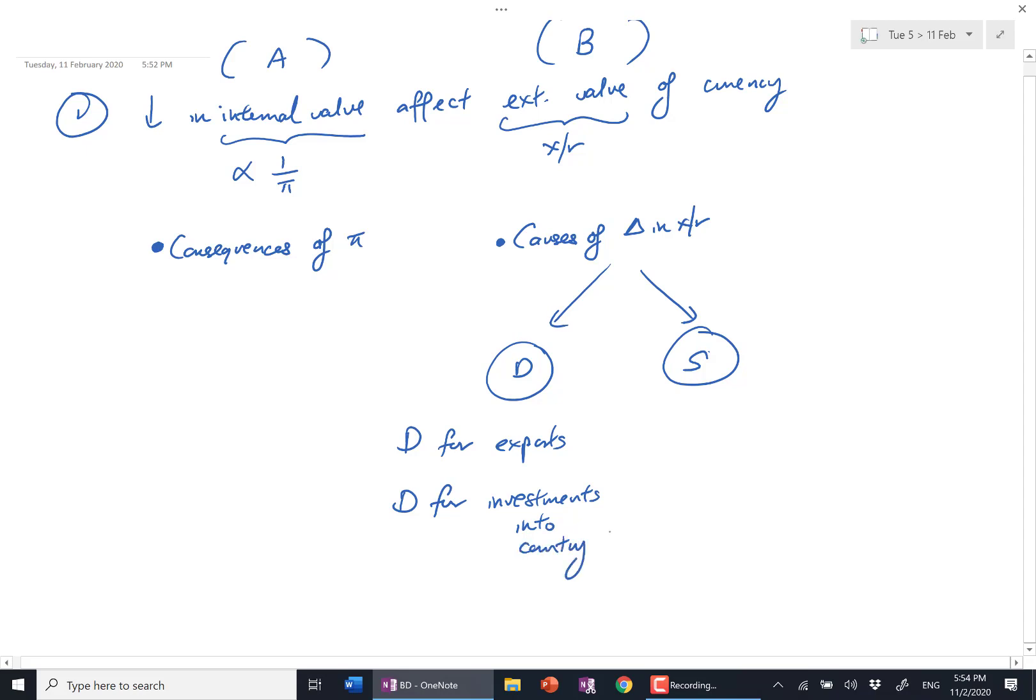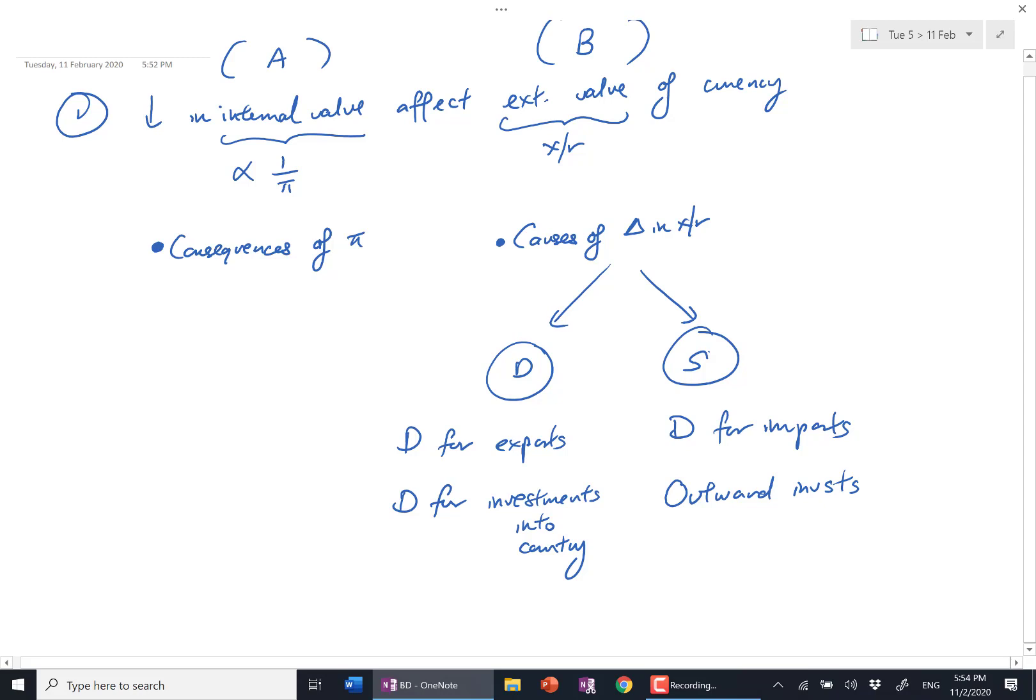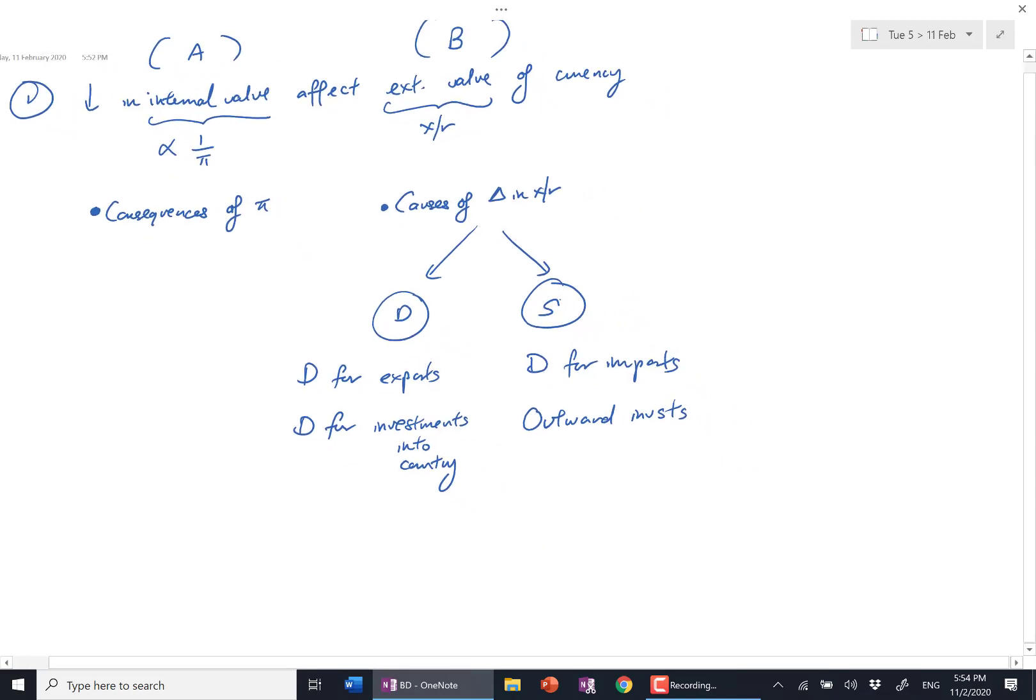So this can be traced back to long run and short run. Supply of currency is your country's demand for imports as well as your outward investments. So I've really gone through these points.